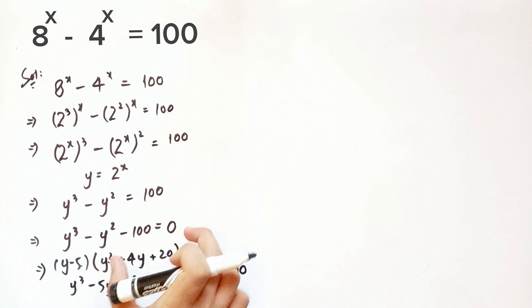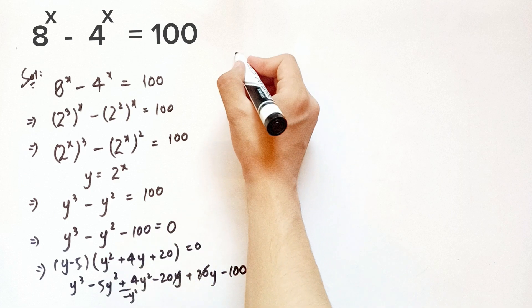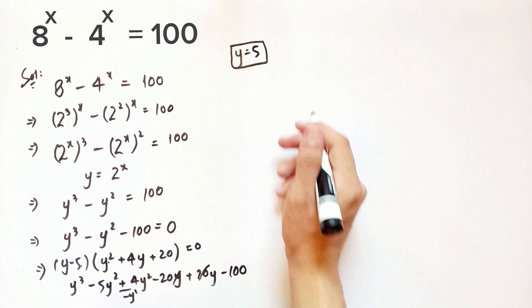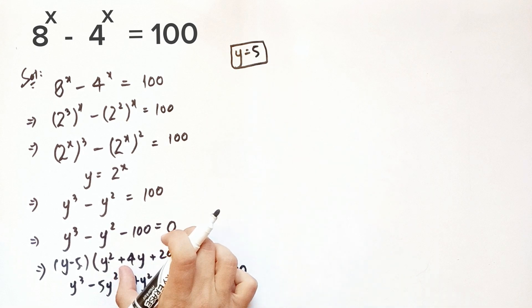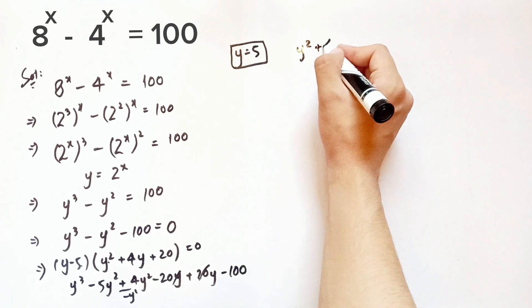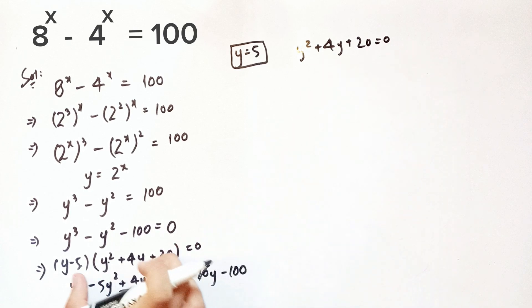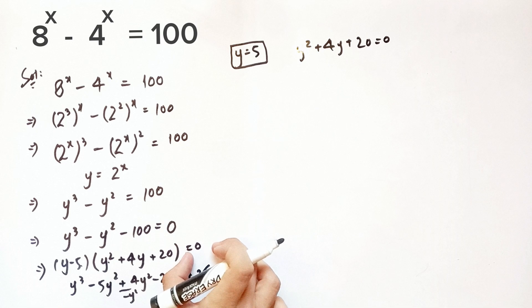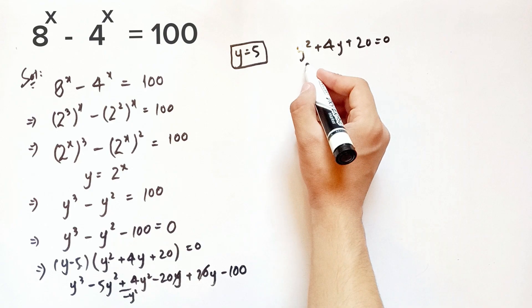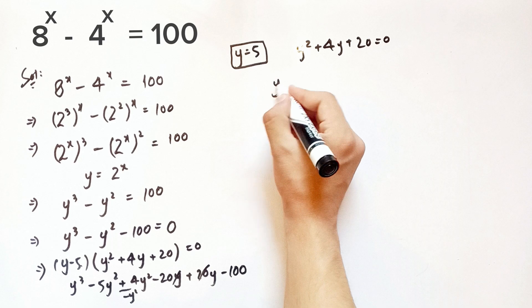We now have one solution y equals 5 and a second factor. To find the other two solutions, we set the second factor equal to zero: y squared plus 4y plus 20 equals 0. Since the product of the two factors equals zero, each factor can be set to zero, so we use the quadratic formula: y equals negative b plus or minus the square root of b squared minus 4ac, over 2a.